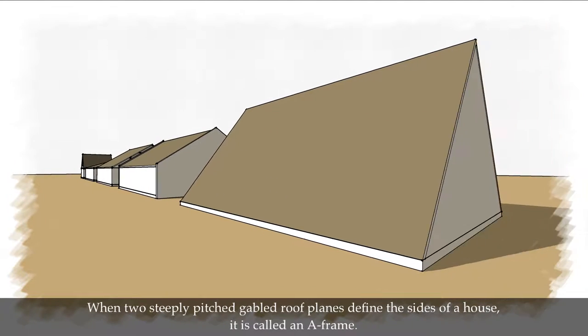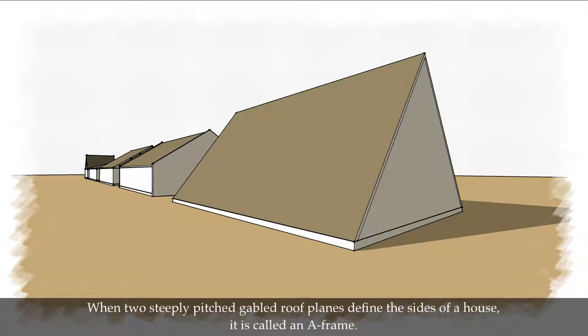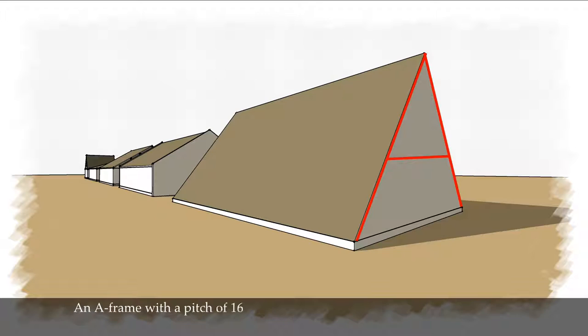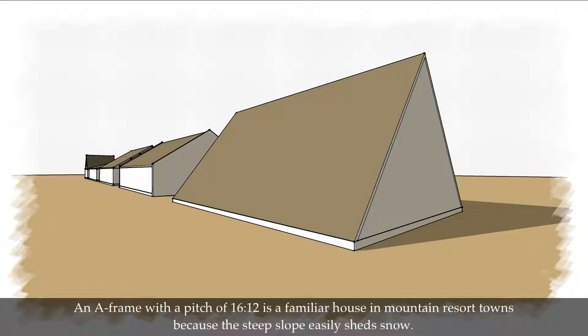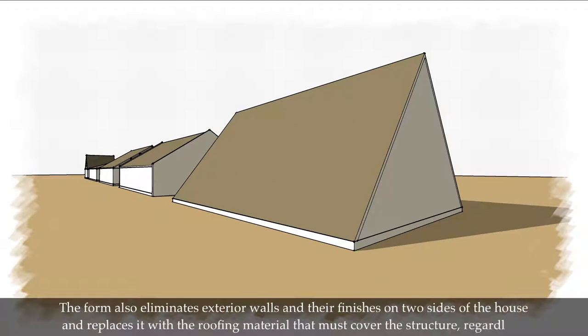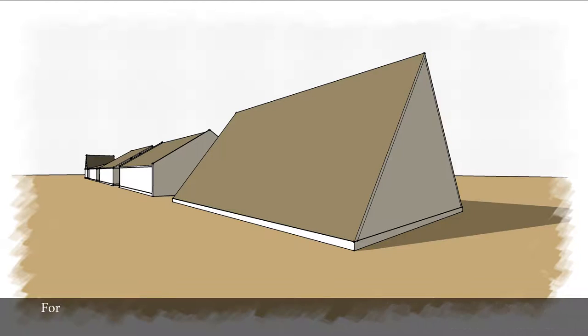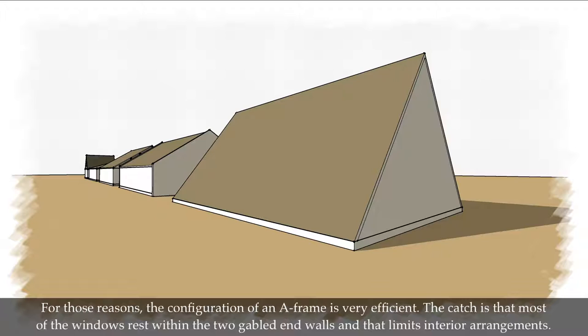When two steeply pitched gable wall planes define the sides of the house, it is called an A-frame. An A-frame with a pitch of 16-12 is a familiar house in mountain resort towns because the steep slope easily sheds snow. The form also eliminates exterior walls and their finishes on two sides of the house and replaces it with the roofing material that must cover the structure regardless. For those reasons, the configuration of an A-frame is very efficient. The catch is that most of the windows rest within the two gabled end walls, and that limits interior arrangements.